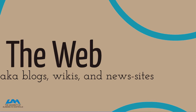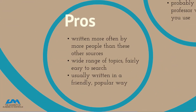Now let's take a look at the web — blogs, wikis, and news sites. The benefits of the web are that it's written by more people more often than these other resources, thousands and thousands of people many times a day. This means it can cover a lot more topics in a lot more ways than these other resources usually can. It's written in a friendly, popular way and it tends to be easy to search.